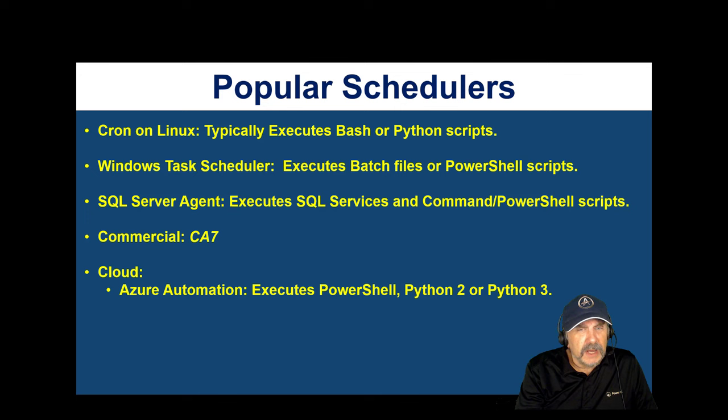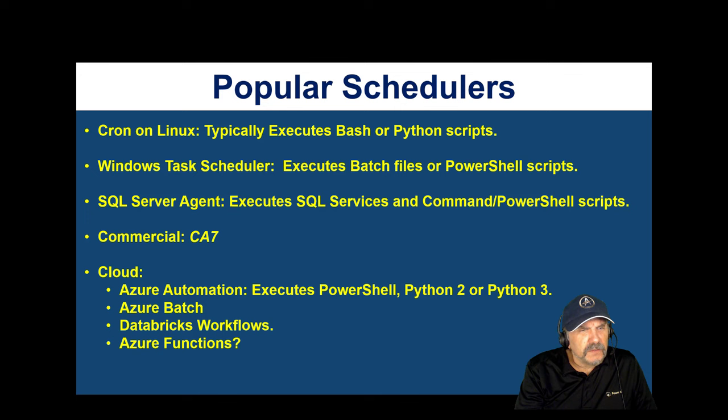There's also Azure Batch, which is more scalable than Azure Automation — designed to support parallel execution of tasks with lots of great features. Databricks Workflows is also worth mentioning again. And Azure Functions is sometimes used when people just need to automate something on Azure, though I'd be careful since it's not really designed as a job scheduling service — but you can put it on a schedule and have it run something.